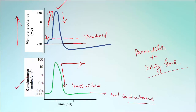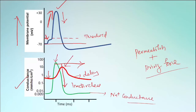The voltage-gated potassium channels also open due to the depolarizing stimulus, just as the sodium channels do, but the potassium channels open slightly slower than the sodium channels. So the potassium conductance reaches its peak after the sodium conductance peak.